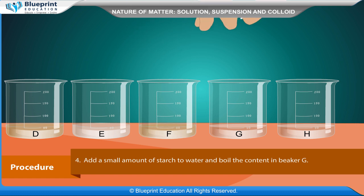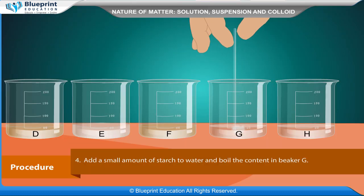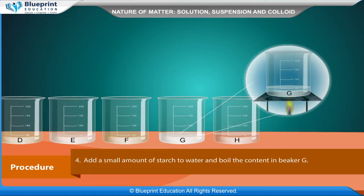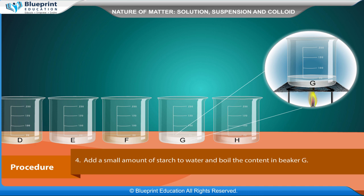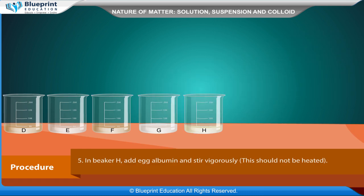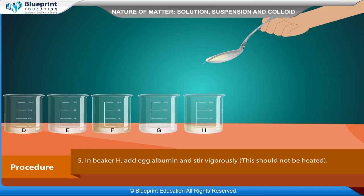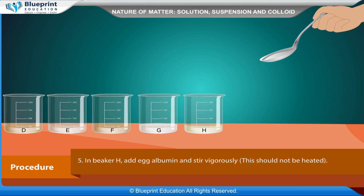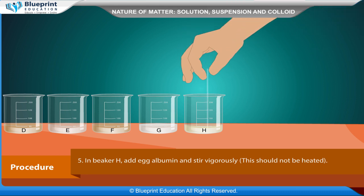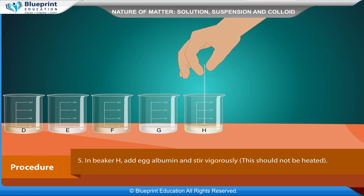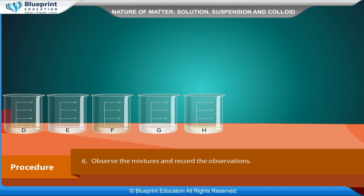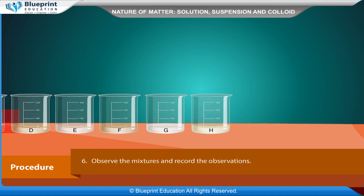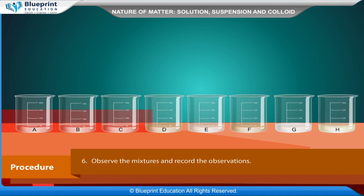Add a small amount of starch to water and boil the contents in beaker G. In beaker H, add egg albumin and stir vigorously. This should not be heated. Observe the mixtures and record the observations.